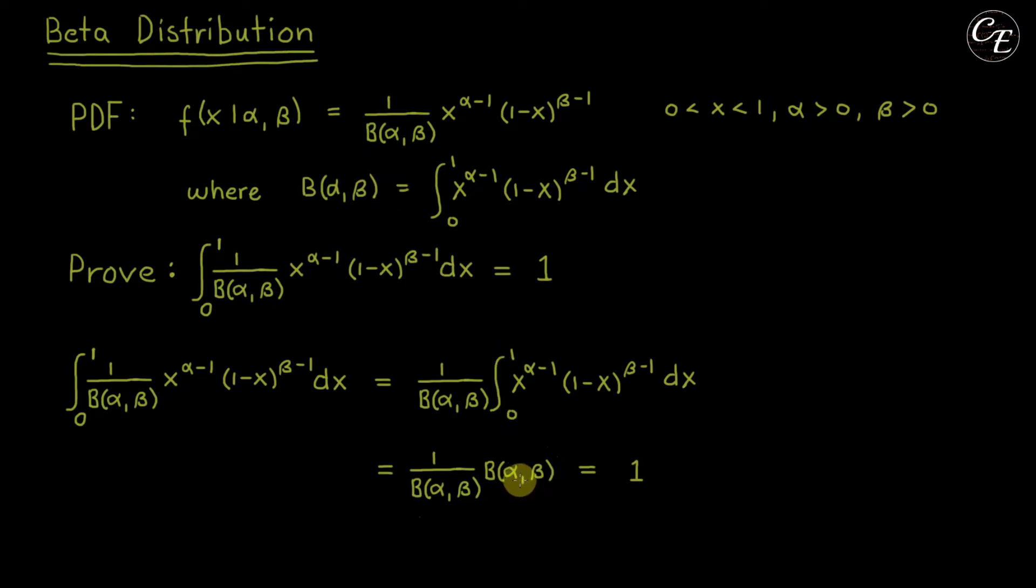Then we can cancel out this big beta of alpha beta and this big beta of alpha beta. Then we are left with just one. So now we have the constant one that we need for our proof.